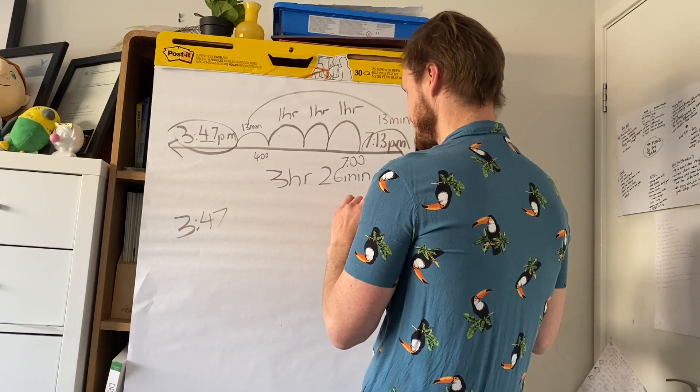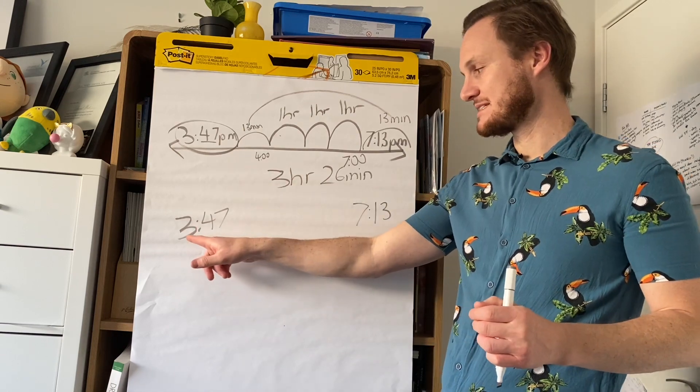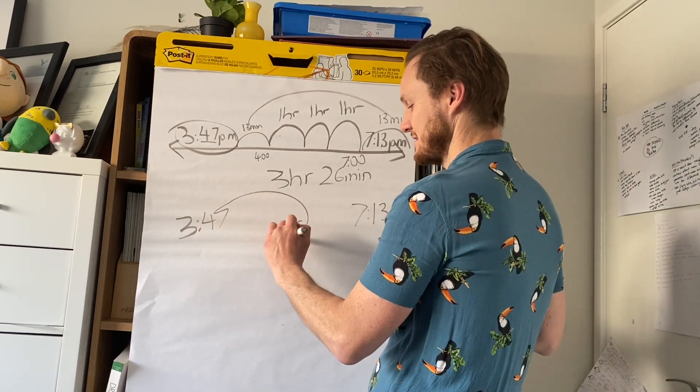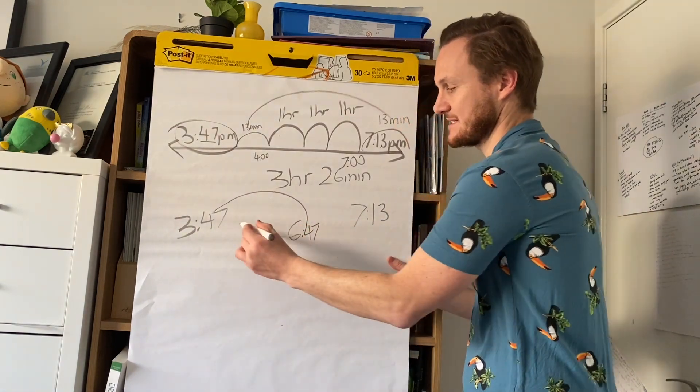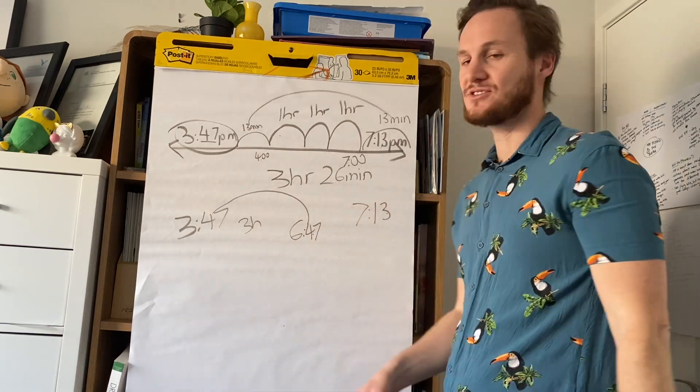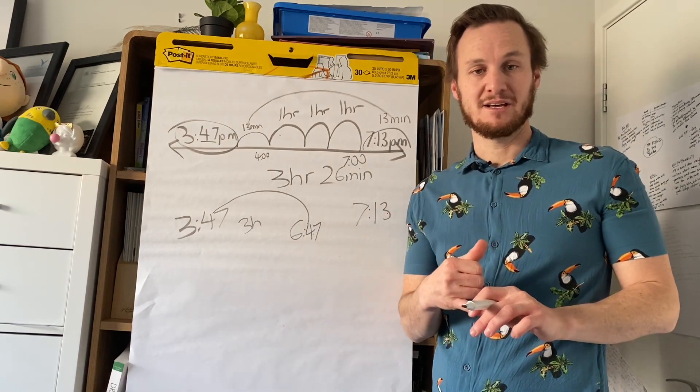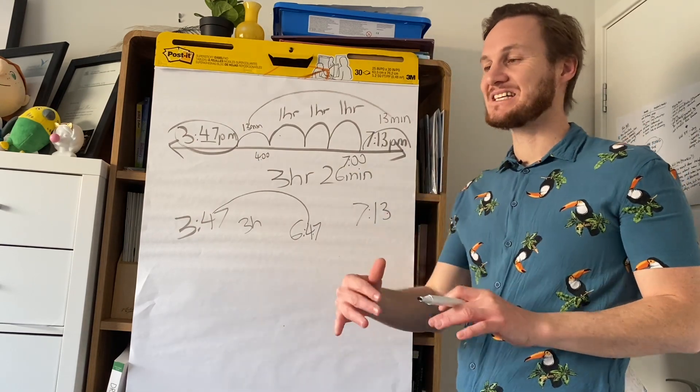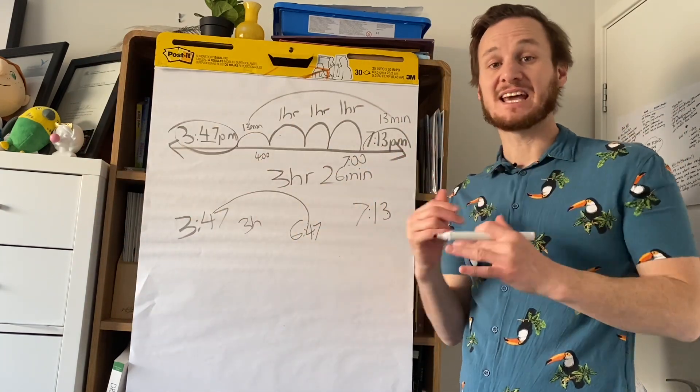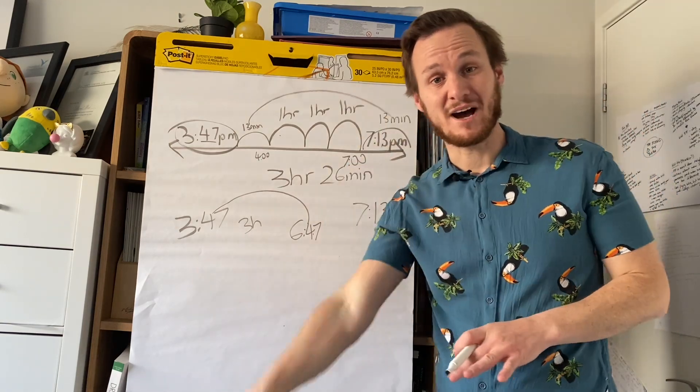Now you might have been able to do it without doing that. You might have been able to go 3:47, 3 hours later would be 6:47, and then jump forward 13 minutes. Plus 13 minutes is 26. You could do it like that too. But for a lot of you, I feel like jumping on a number line will be the best way to do it. Because it's easy, especially when you're jumping to the next hour, or if something's got like 47 minutes or something like that can get quite confusing doing it in your head. Holding all the information in your head with something like time is difficult. So write it down. It will make it so much easier.